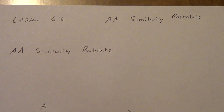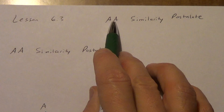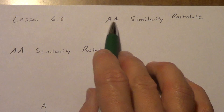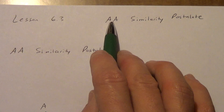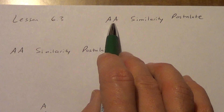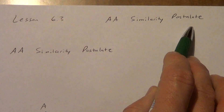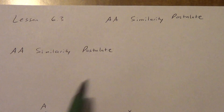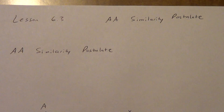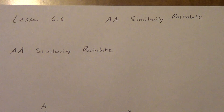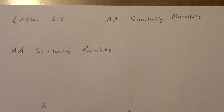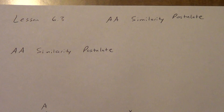Lesson 6.3 tonight. We're going to be doing what's called the angle-angle similarity postulate. Remember how we did side-angle-side and stuff like that and we used these letters? I'm going to tell you what the angle-angle similarity postulate says, then give you an example of it, a picture of it, and then we're going to go straight into some examples. We're going to try to get this all done in one video.